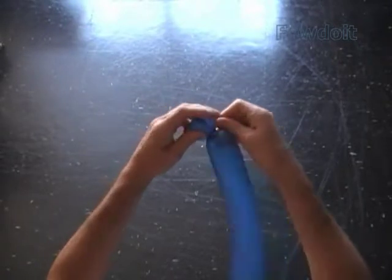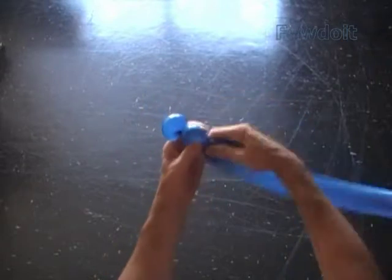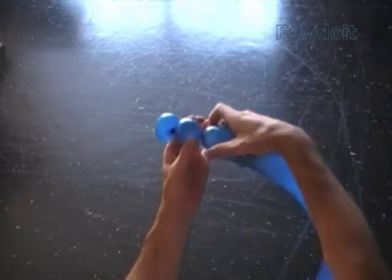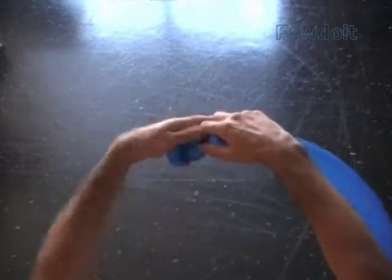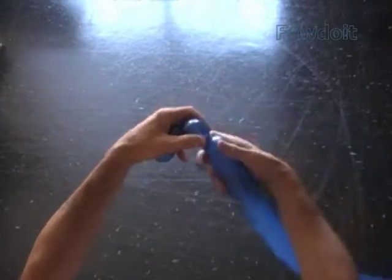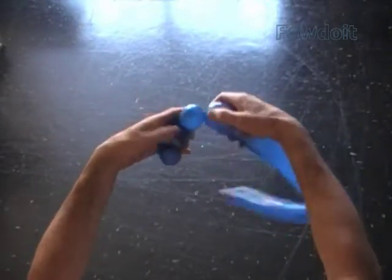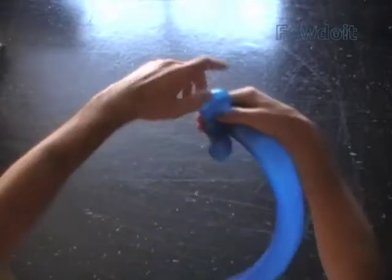Twist the second about one to one and a half inch long bubble. Twist the third soft about one inch bubble. Lock both ends of the third bubble in one lock twist.